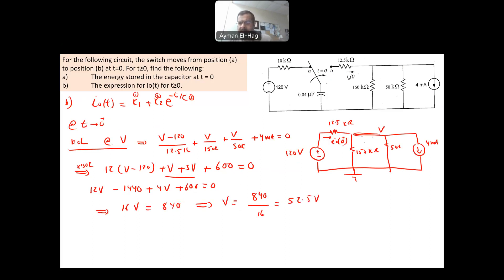Your V is equal to 840 divided by 16. And this will give me 52.5 volts. This is the voltage here at this node. Now, your I0 at this moment is equal to 120 minus 52.5 divided by the resistance in between, the 12.5 kilo. And this will give me 5.4 milliamp. So I calculated I0 at that specific moment.